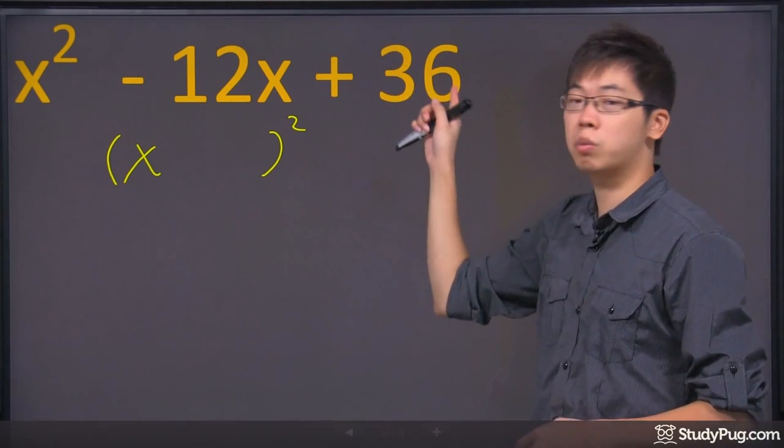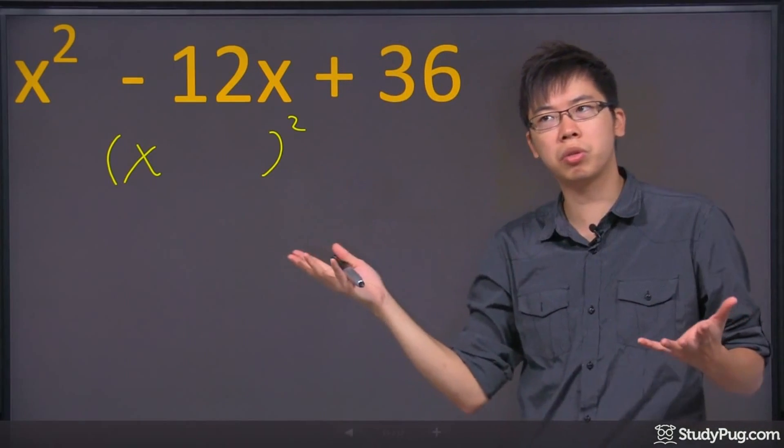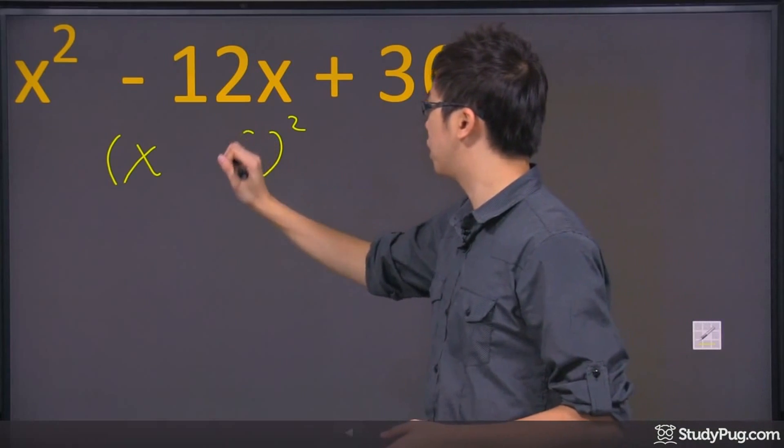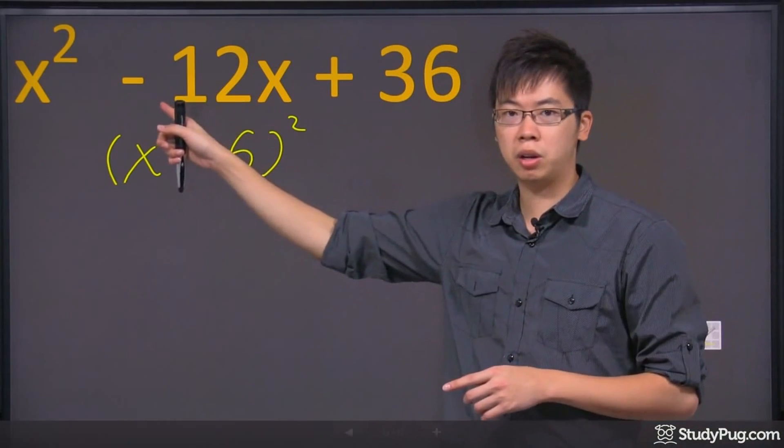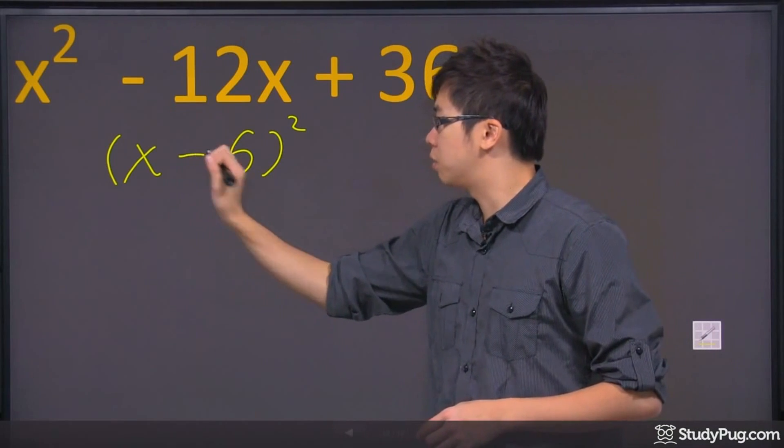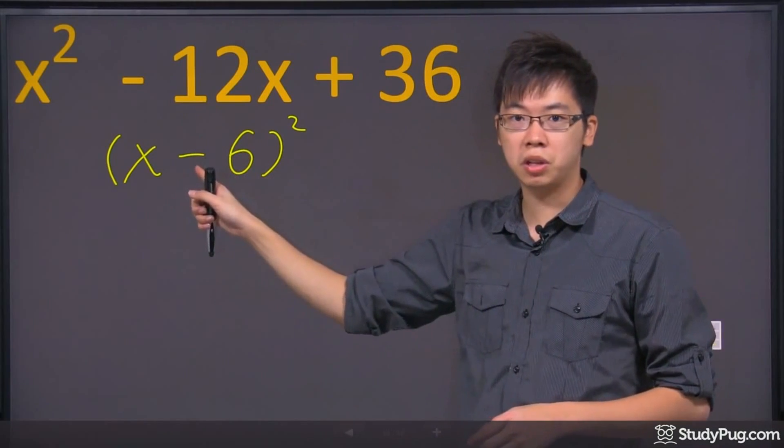This number here is just a square root of this number here. So root 36, what is that? Six. So just put a six down right here. Now, but before you even think about the negative sign right here, it's going to be a negative six. This sign here corresponds to this sign, okay?